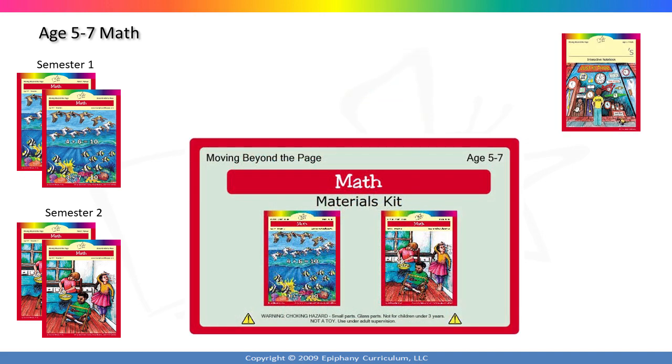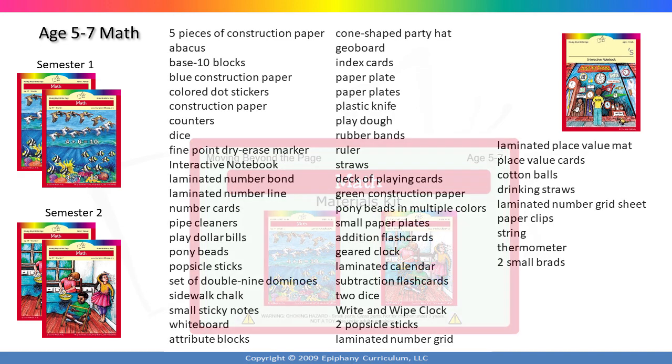The materials kit that accompanies this level will blow you away with how comprehensive it is and how easy it is to implement with the curriculum. It contains what you would expect in a math curriculum, like an abacus, base 10 blocks, and number cards. But it also has over 50 different items from playing cards to rubber bands and paperclips. Everything you need already laid out.